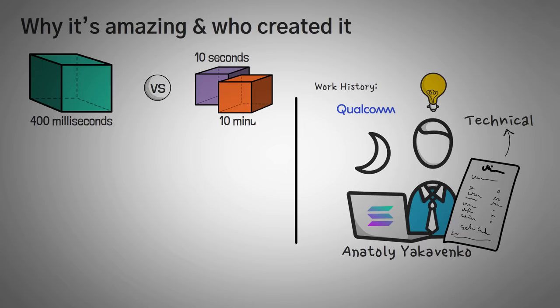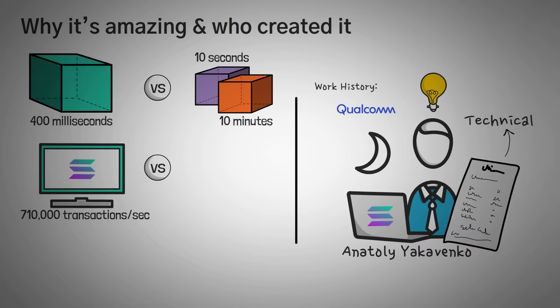Also, Solana boasts that they can handle up to around 710,000 transactions per second, which is like 30 times the amount that Visa currently handles. Although they've never actually been able to go past 50,000 in the past, this doesn't mean they can't do 710,000, it just means they haven't tried.